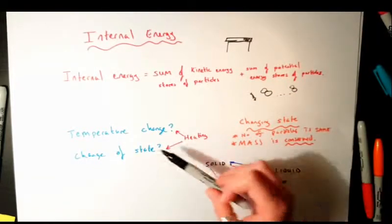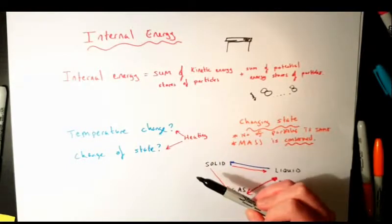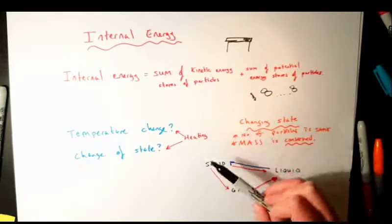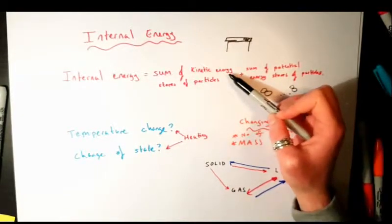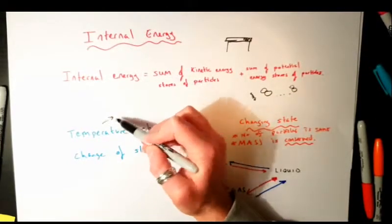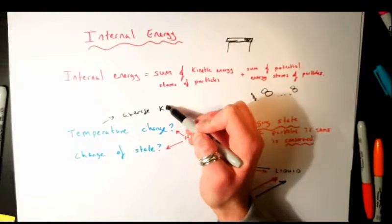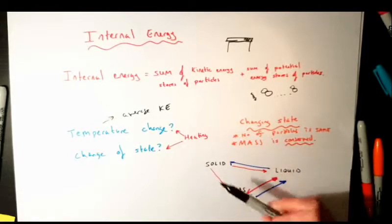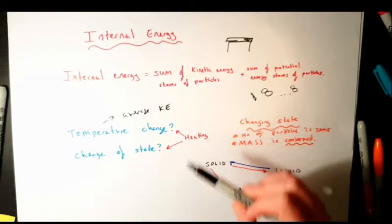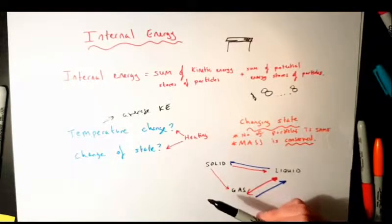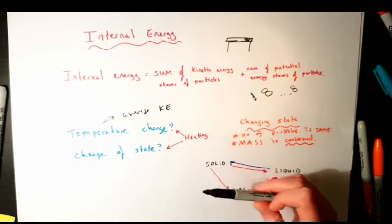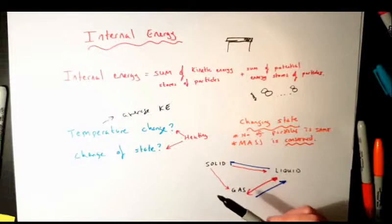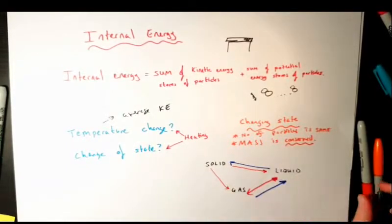When we heat an object, one of two things happens. Either we change the temperature — giving particles more energy so they vibrate or move more, meaning higher kinetic energy, since temperature is a measure of the average kinetic energy of the particles. Or instead of increasing kinetic energy, the energy is used to break or weaken bonds — affecting forces of attraction — which leads to a change of state.